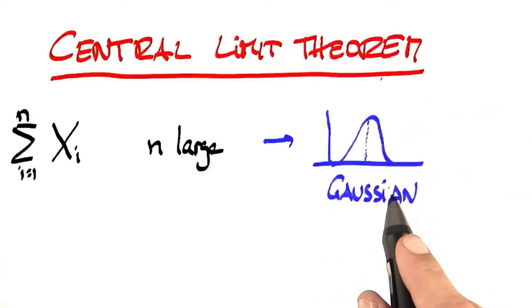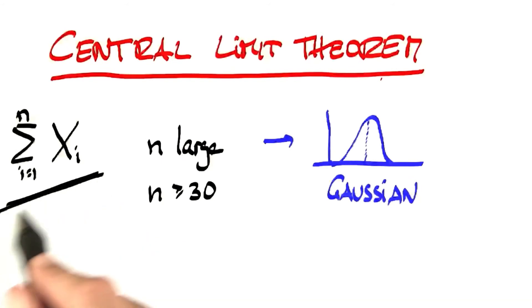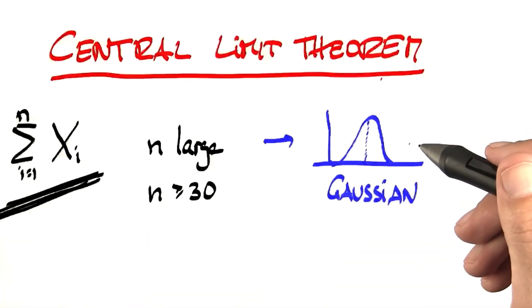We discussed the Gaussian in depth. It has its own formula. And typically, if n is as big as 30, that is maybe you test 30 people whether they have cancer or not, that's usually good enough to approximate this really complicated binomial over here with this relatively simple Gaussian function. We'll learn more about this later.